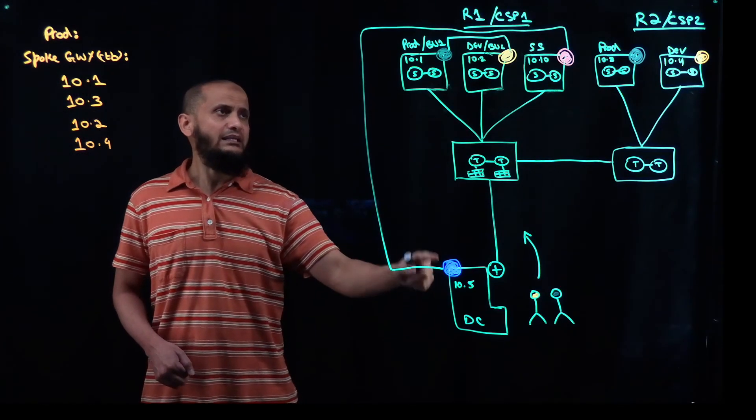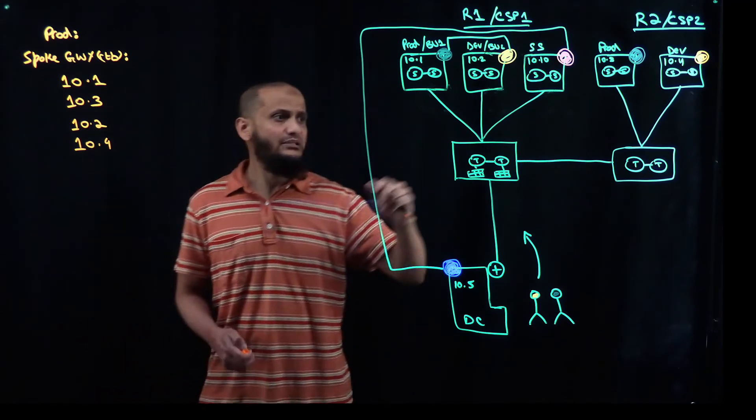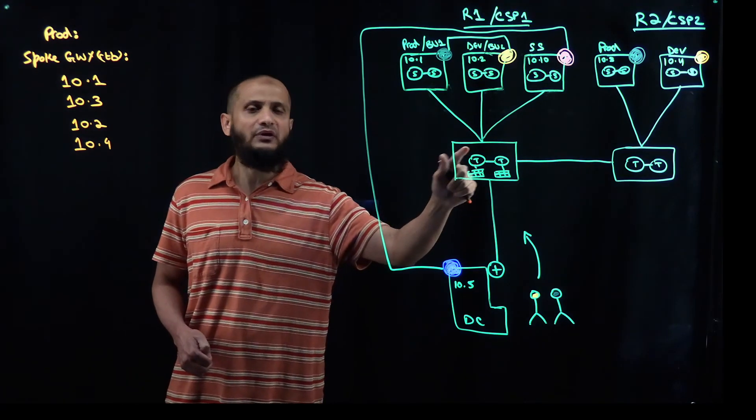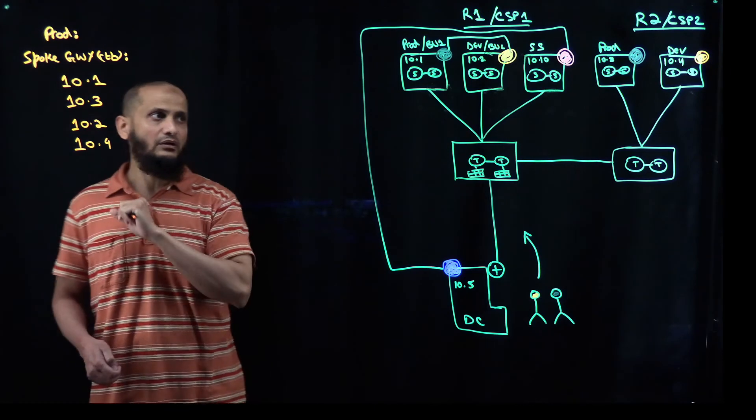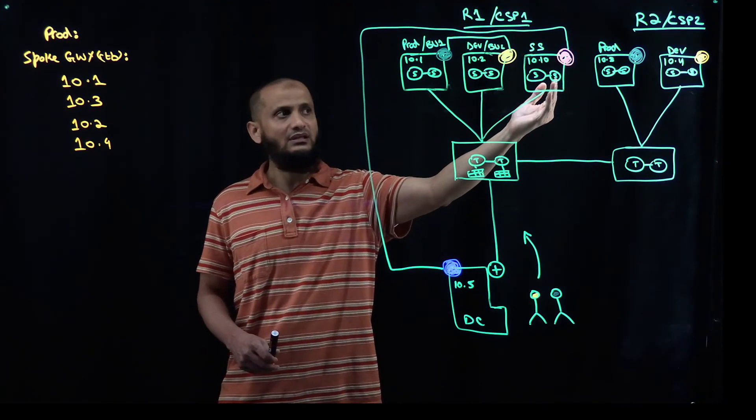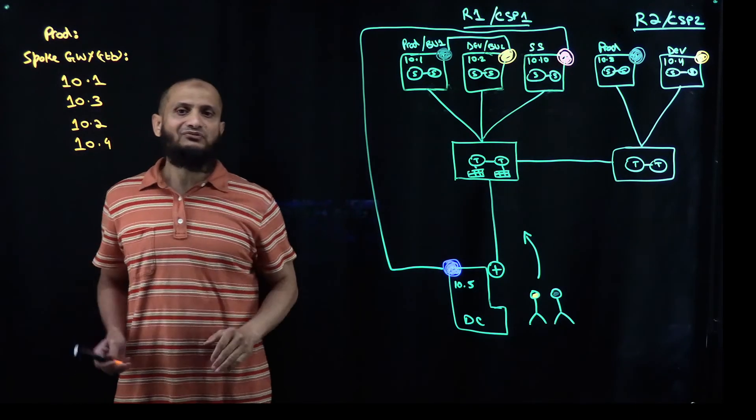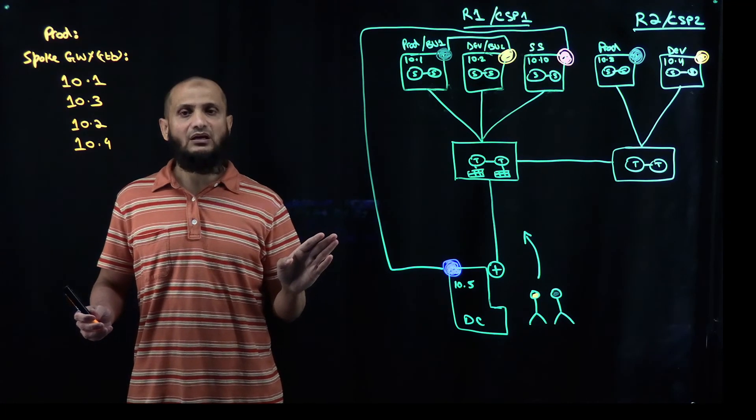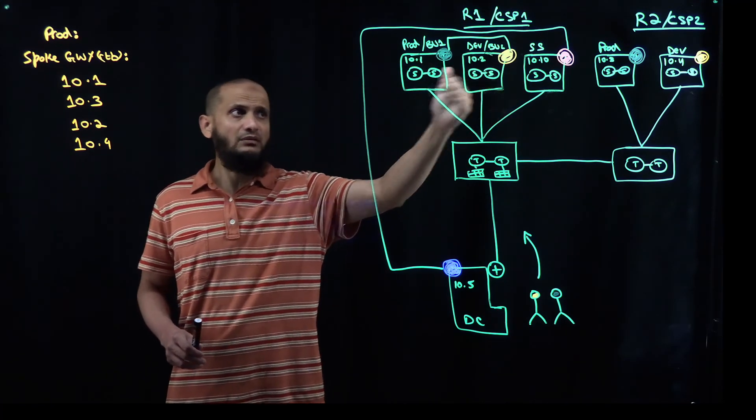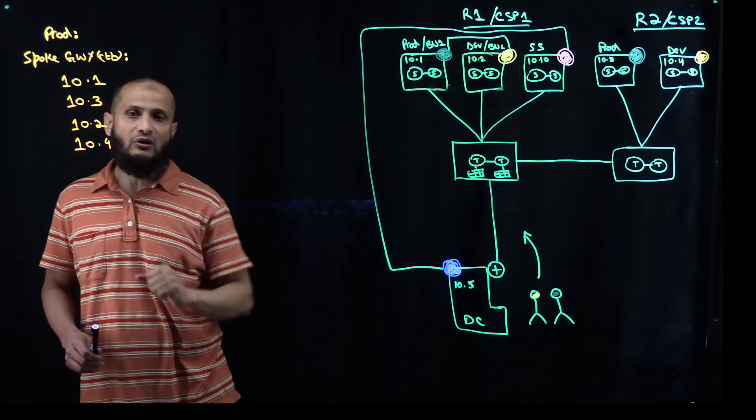So in the spoke gateways routing table, so far we have four prefixes. Does prod has any connection policy with on-prem? No, the answer is no, we don't have any connection policy. Is there anything else which could be part of the spoke gateways? Yes, that could be your transit CIDR address space or a subnet would also be over here. Now, what about if I'm going to create a connection policy between the prod and then the shared services? Then at that time, you are going to just add 10.10 over here. So you really don't have to do anything over here, right? Everything will be done automatically by Aviatrix Controller. Once you attach a connection policy between different network domains, then Aviatrix Controller is going to populate this spoke gateways routing table automatically.